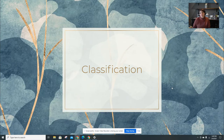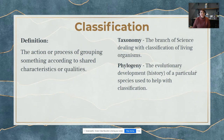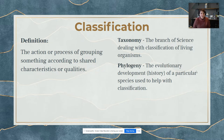Hi, this is Mrs. Homer, and today we'll be talking about classification and taxonomy. Classification is basically grouping things together based on their shared qualities. For example, Netflix classifies things based on shared qualities or genres to help you better find what you're looking for.